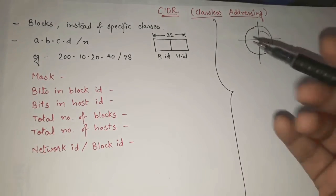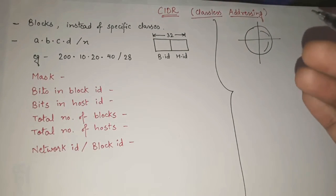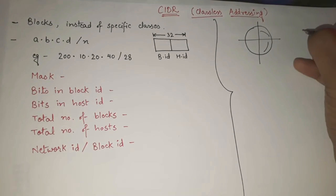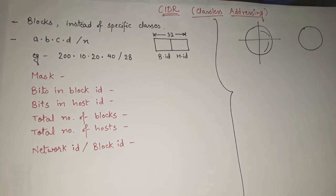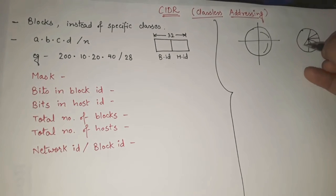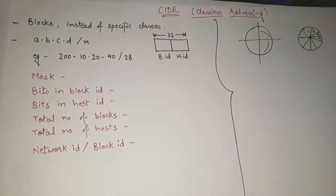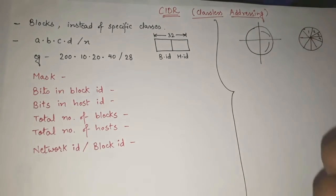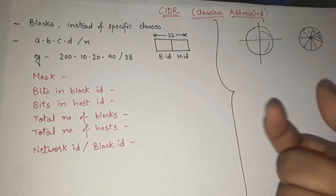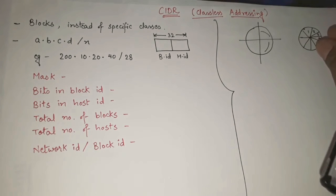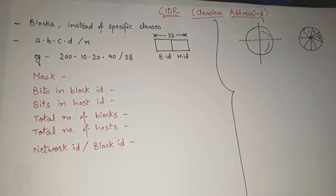Classless addressing means the IP addresses will not have any specific class — no class A, class B, or class C. Instead, we simply have one network divided into specific blocks — block 1, block 2, block 3. Whenever any organization needs IP addresses, we can assign any block of addresses — whatever amount that organization needs, we assign that many addresses in a block to that organization.